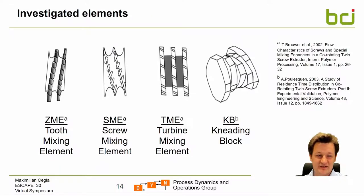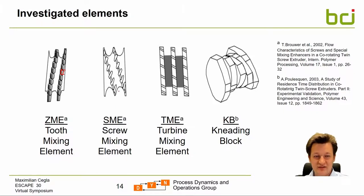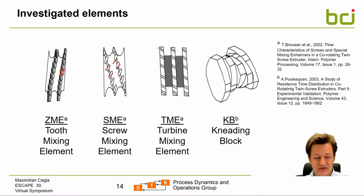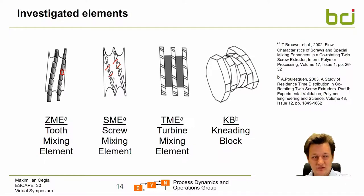This enables use of the residence time distribution information to better describe internal flows in the model. The investigated elements for this case study were: tooth mixing elements, which are conveying elements with small teeth on the edges; screw mixing elements, which are regular conveying elements with parts melted out at the edges allowing some backflow; turbine mixing elements with turbine-shaped elements followed by hollow sleeves; and kneading blocks, which are discs staggered at different staggering angles. References for the first three elements were from Brauer (2002) and kneading block data from Puliskan (2003).